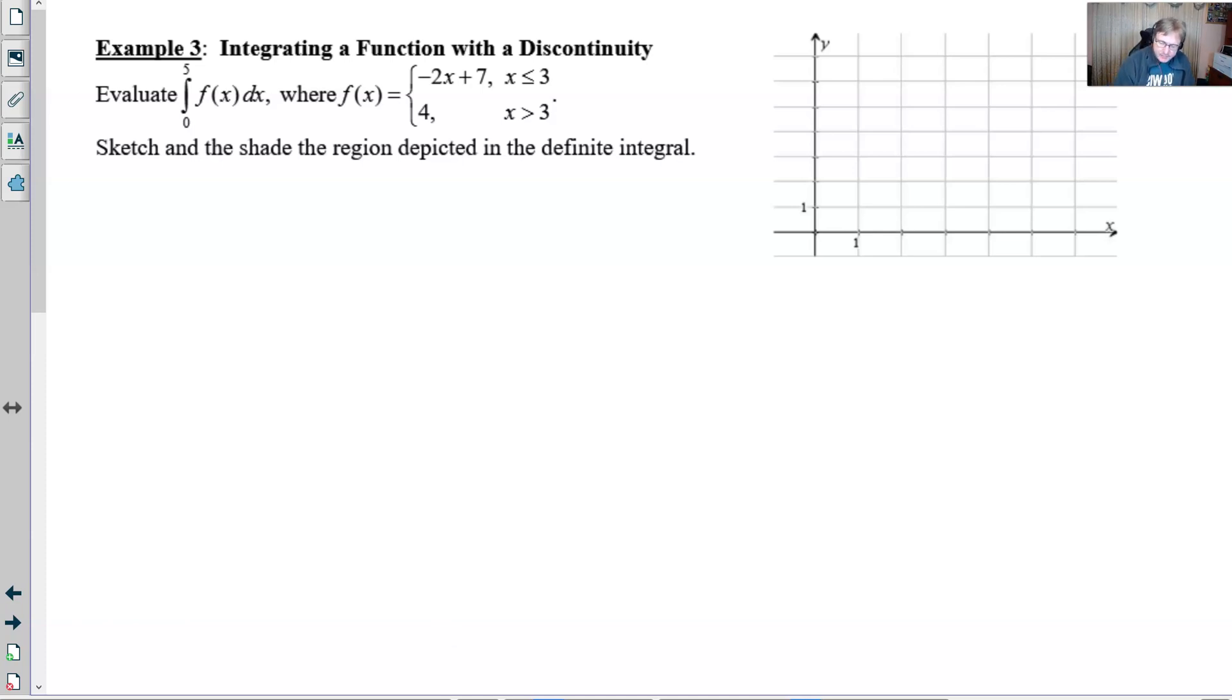If we sketch this graph and we start with the negative 2x plus 7, that would consist of a line with a y-intercept of 7, which would be 1, 2, 3, 4, 5, 6, 7, right about there.